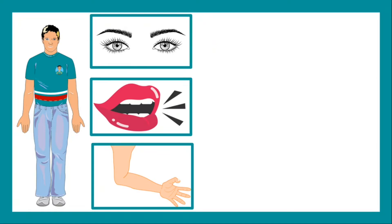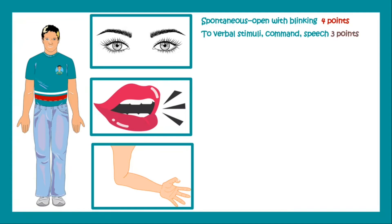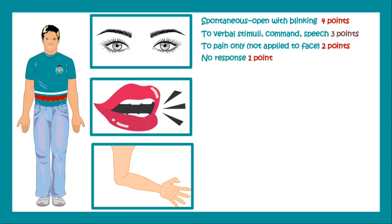Eye opening response can be spontaneous opening with blinking — we give it four points. To verbal stimuli or command, if a person opens the eyes, it is three. To pain only, if applied to the face and the person opens the eye, we give two points. And if there is no eye opening, we give one point.